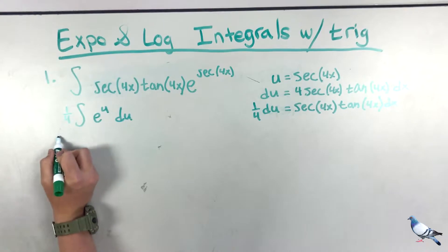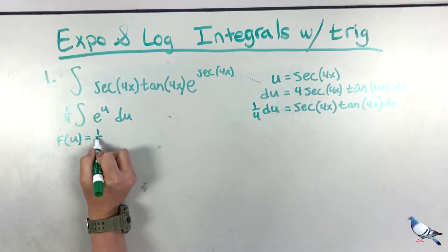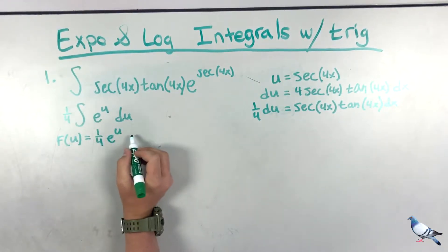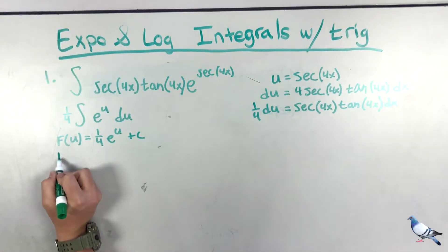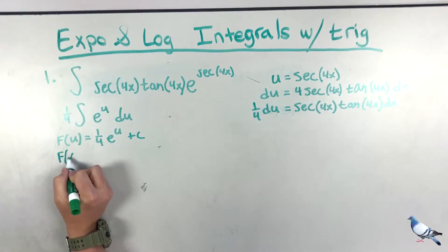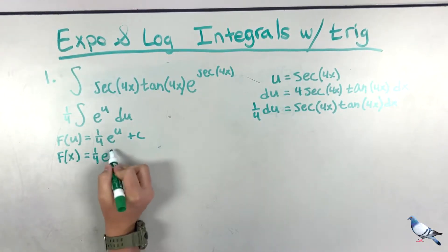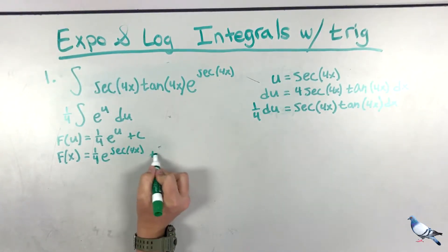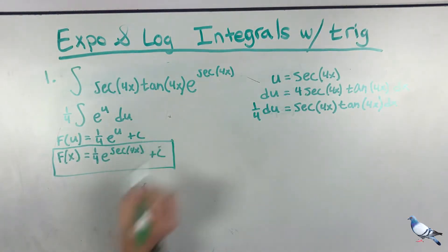Now we integrate in terms of u: F(u) = (1/4)e^u + C, since the integral of e^u is just e^u. Writing back in terms of x, F(x) = (1/4)e^(sec(4x)) + C, and that is the solution to our first indefinite integral.